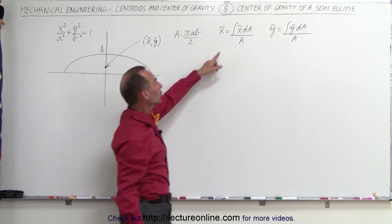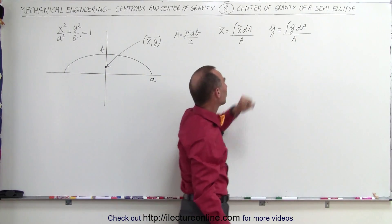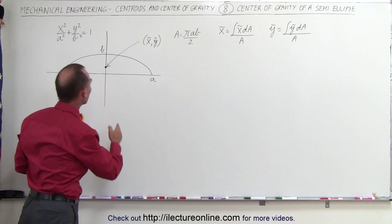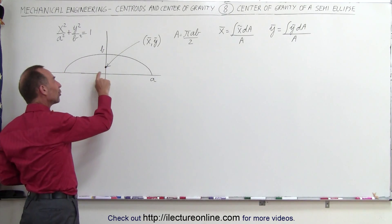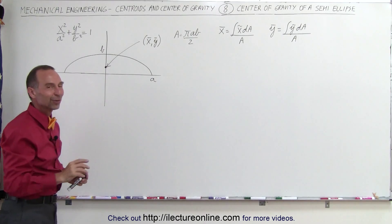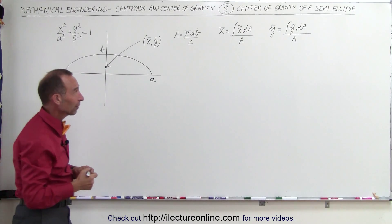So we can either find the x-coordinate or the y-coordinate by one of these two equations. But when we look at it we realize that the x-coordinate of the center mass will be zero. So we'll be looking for the y-coordinate of the center mass.